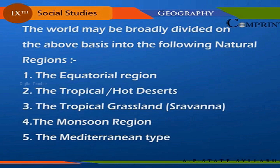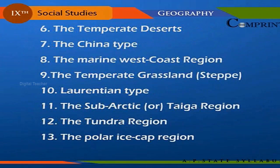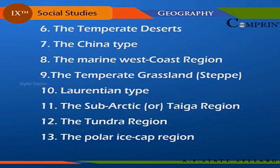The natural regions of the world are: 1. The equatorial region, 2. The tropical hot deserts, 3. The tropical grasslands, 4. The monsoon region, 5. The Mediterranean type, 6. The temperate deserts, 7. The China type, 8. The marine west coast region, 9. The temperate grasslands, 10. The Laurentian type, 11. The subarctic or taiga region, 12. The tundra region, and 13. The polar ice cap region.